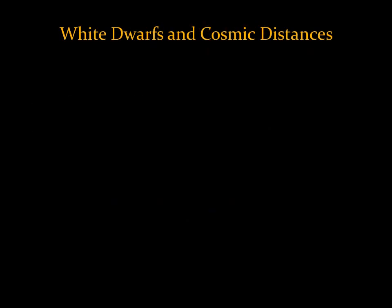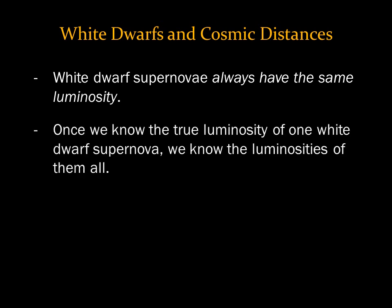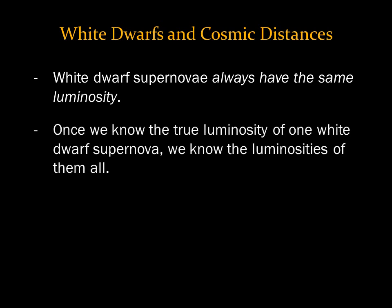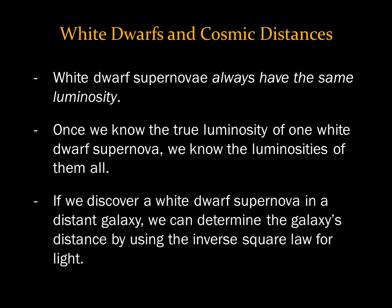One more thing about white dwarf supernovae: the process is the same for all of them. A white dwarf in a binary system exceeds 1.4 solar masses and explodes — it's the same physics every time, so white dwarf supernovae always have the same luminosity. Therefore, once we know the true luminosity of one white dwarf supernova, we know the luminosities of them all. Whenever we discover a white dwarf supernova in a distant galaxy, we can determine the galaxy's distance by using the inverse square law for light. We'll talk more about how they have helped us establish cosmic distances soon.